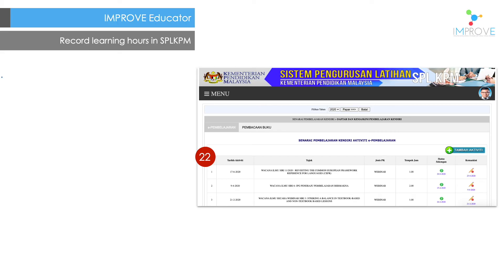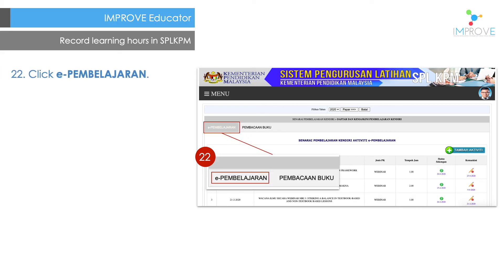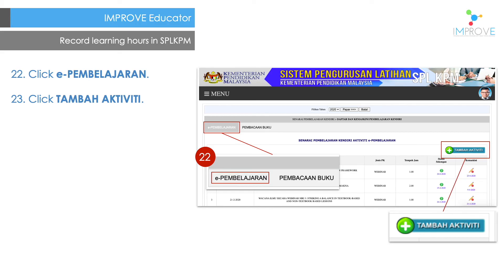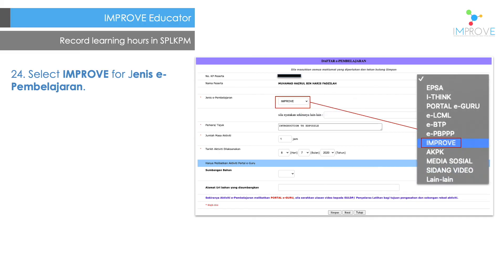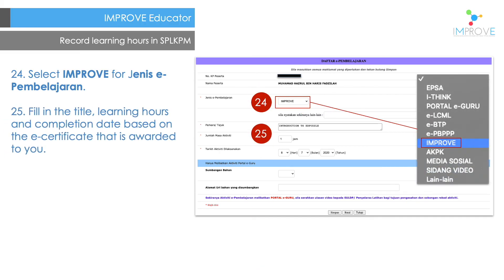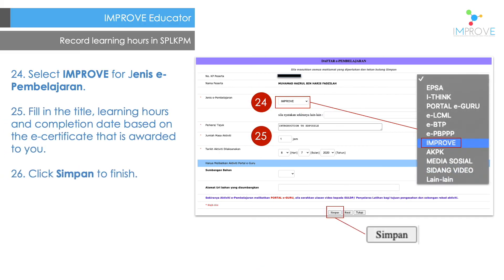Click the appropriate tab and add an activity. After that, select Improve from the menu. Fill in the title, learning hours, and completion date based on the e-certificate that is awarded to you. Finally, click save to finish.